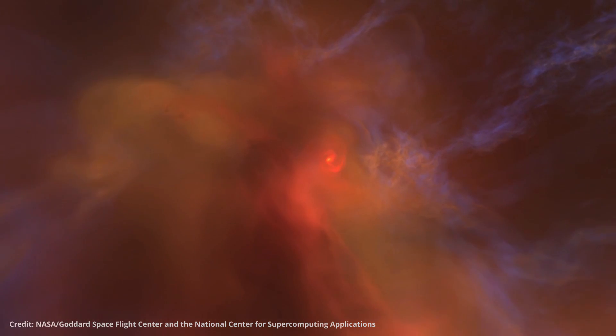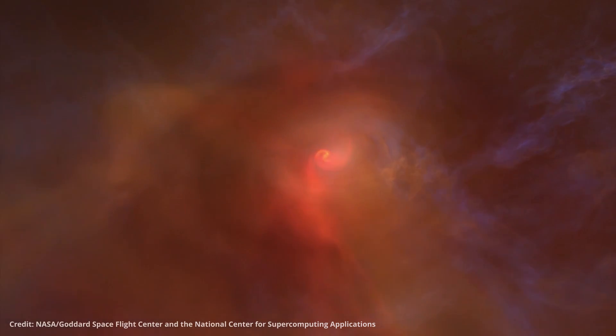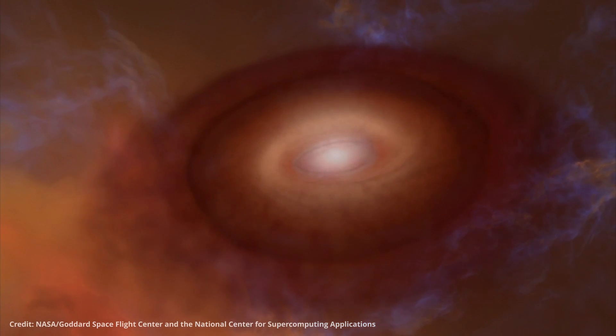It accumulates more and more gas, until after 100,000 years, where it has enough mass to be classified as a protostar. This is our young Sun.